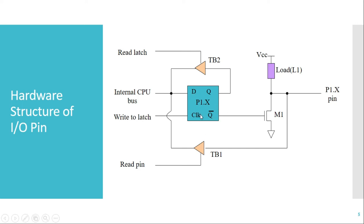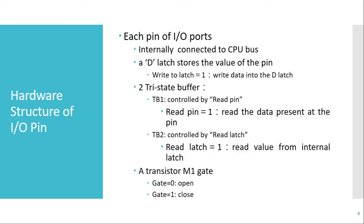In this structure, the main component is a D-latch, which is used to store 1-bit data. Then we have two tri-state buffers. Whenever the tri-state signal is low, there is no connection between input and output; whenever it is high, the input is connected to the output. We also have an NMOS transistor: when a high signal is given to the gate pin, the MOSFET turns on; when a low signal is given, the MOSFET is off. There is a pull-up resistor connected to the pin to maintain a fixed status.